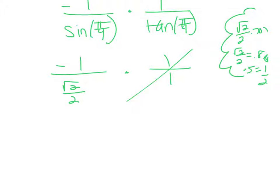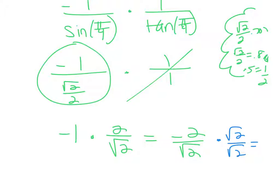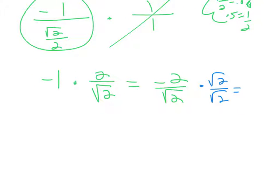So cotangent of π/4 is just 1 — I don't really need that piece. I'm going to keep the first factor, change it, and flip it, leaving my answer as negative 2 over radical 2. You could rationalize this by multiplying by radical 2 over 2, making it negative 2 radical 2 over 2. The 2s cancel, and your final answer is negative radical 2, fully simplified.